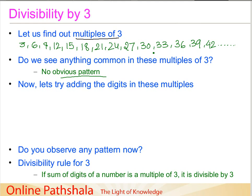So it implies that we have to do something different in order to check for the divisibility of three. What we will do now is try to add the digits in these multiples, and when I say add the digits it's for numbers with more than one digit. So let's start with the number 12 and try adding the digits in this multiple.